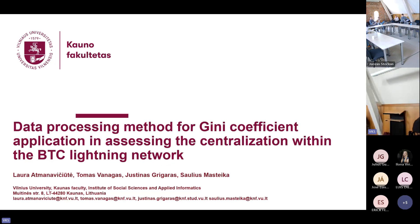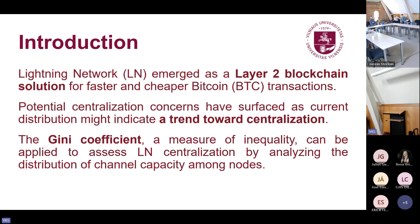Hello everyone. Today I'm going to present our paper on a data processing method for Gini coefficient application in assessing the centralization within the Bitcoin Lightning Network. The Lightning Network has emerged as a second-layer solution, introduced as a faster, cheaper, and more scalable alternative for Bitcoin transactions. However, since its introduction, centralization concerns have surfaced, and current distribution might indicate a trend towards centralization. To quantify this, the Gini coefficient — a measure of inequality — can be used by analyzing the distribution of channel capacity among nodes.